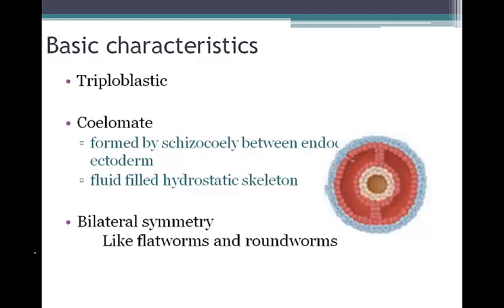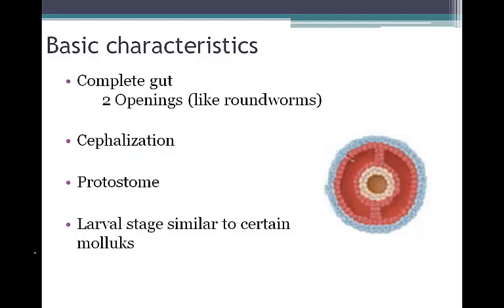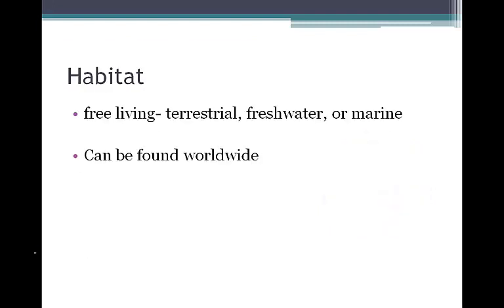Annelids exhibit bilateral symmetry, very similar to flatworms and roundworms. They have a complete gut with two openings, exhibit segmentation, and undergo protostome development. They have larval stages similar to certain mollusks, and given this similar embryological development, scientists believe that annelids and mollusks share a common ancestor.